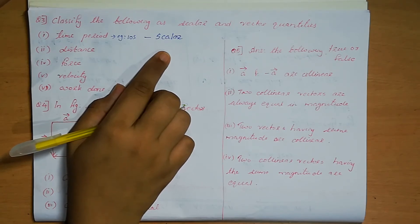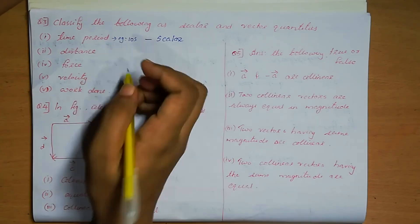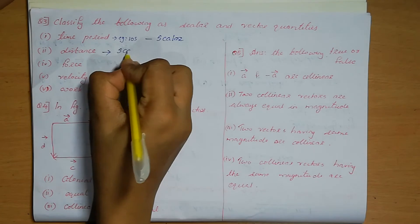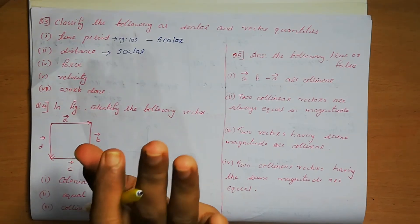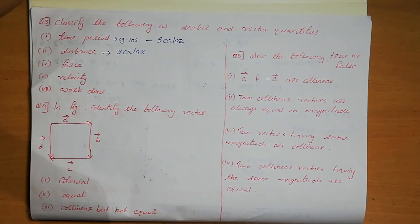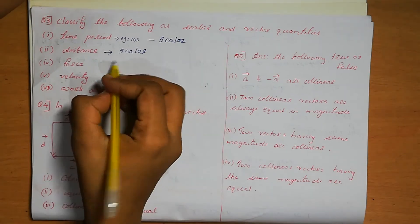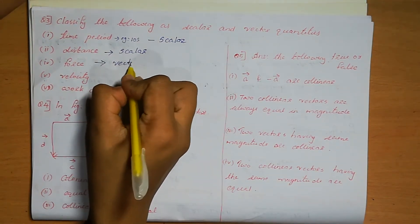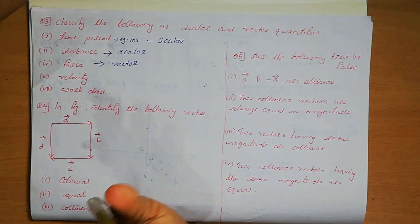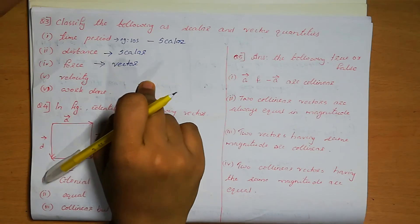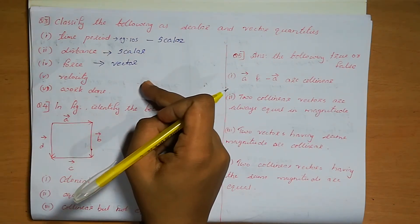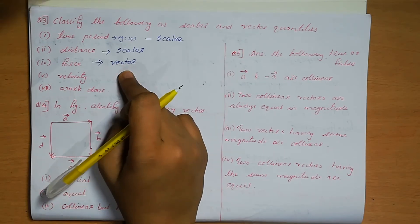Next, distance. For example, 10 kilometres or 5 metres — there is only magnitude and no direction. So distance is also a scalar quantity. Next, force. We apply force in some direction, so force has both magnitude and direction. So force is a vector quantity — for example, 5 N applied downward or upward.